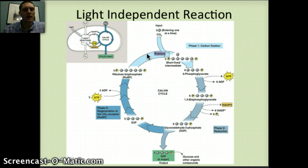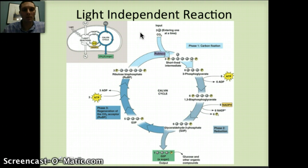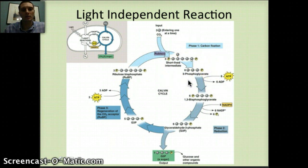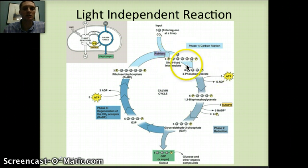Phase one is carbon fixation — that's putting together these carbon molecules. What drives this is a molecule called RuBisCO. RuBisCO is a five-carbon molecule, and if we add a CO2 molecule to it, we create a six-carbon molecule. That six-carbon molecule is very unstable and quickly breaks apart into two separate three-carbon molecules. So from RuBisCO plus CO2 we get a six-carbon molecule, which then splits into two three-carbon molecules.